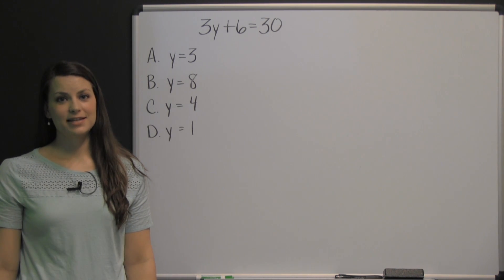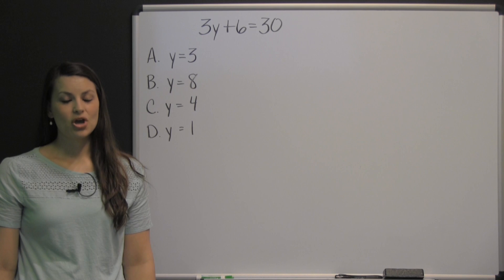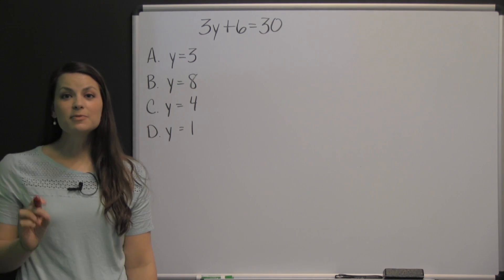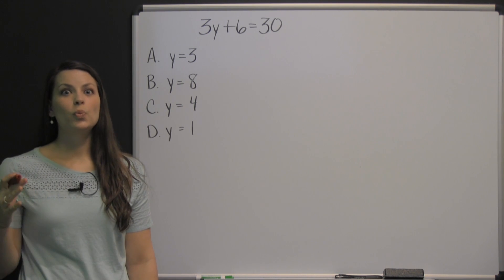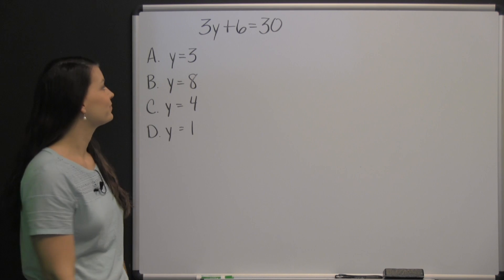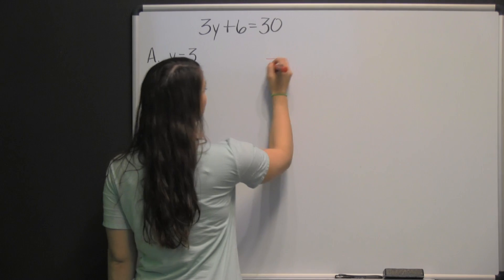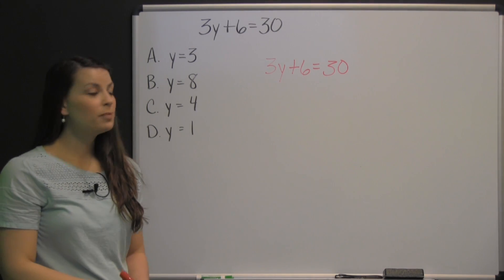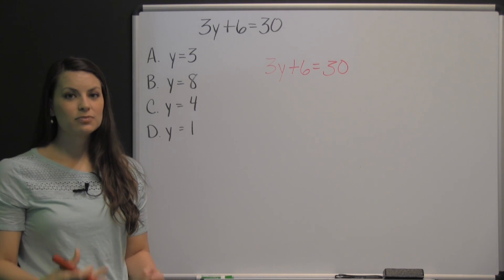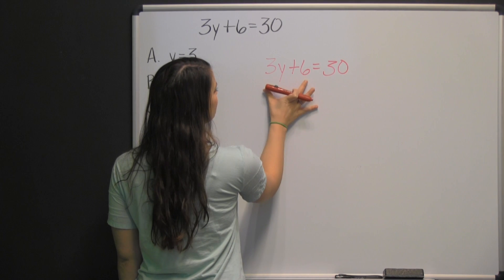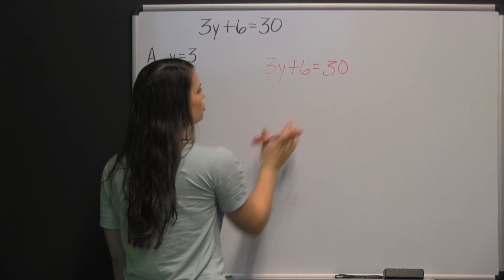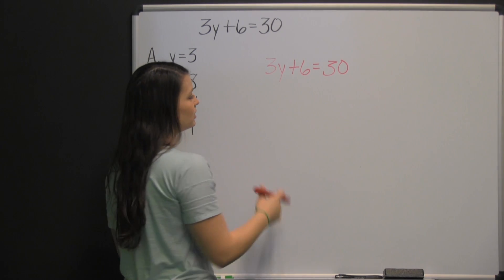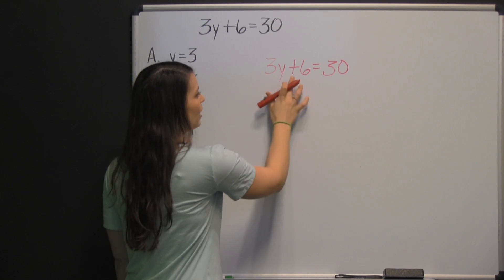This is a question from the TABE practice test in the mathematics computation section. On the TABE exam, you will not be able to use a calculator, so be prepared to answer these questions with simply a pencil and paper. Let's get to work: three y plus six equals thirty. With this type of algebra problem, you want to start by undoing the addition or subtraction being done to your variable.